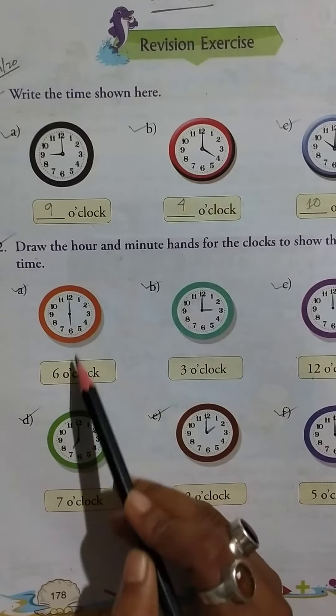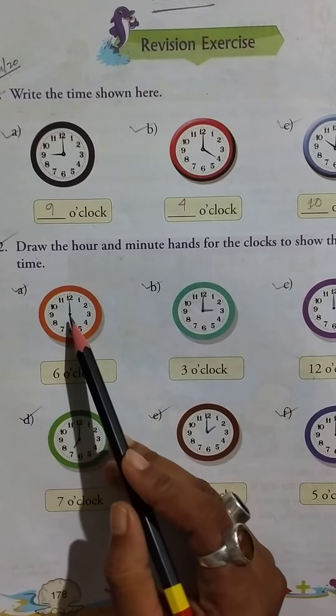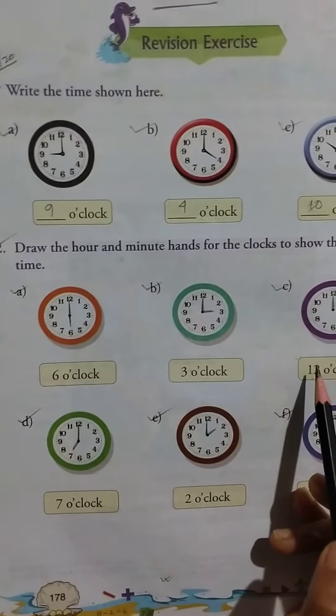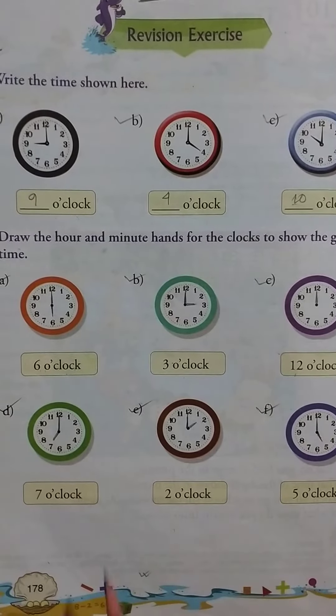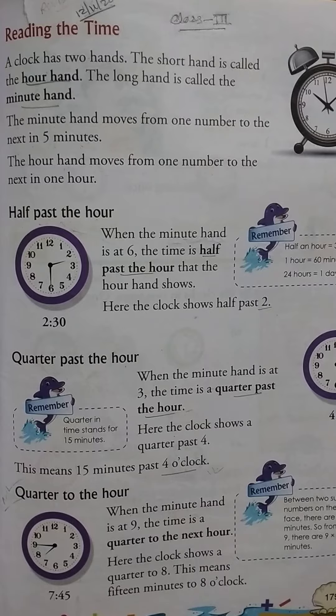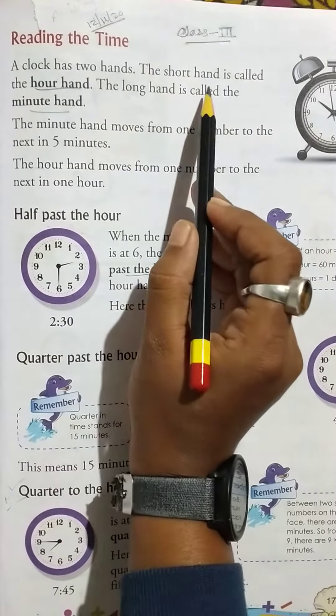the given time. Here, 6 o'clock, then 3 o'clock, and then 12 o'clock. Then 7 o'clock, 2 o'clock, and 5 o'clock. Now, reading the time. A clock has two hands. The short hand